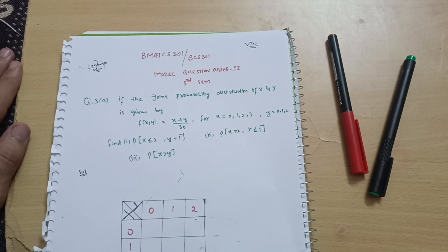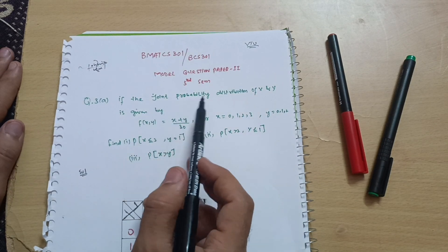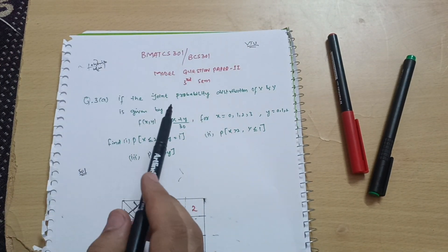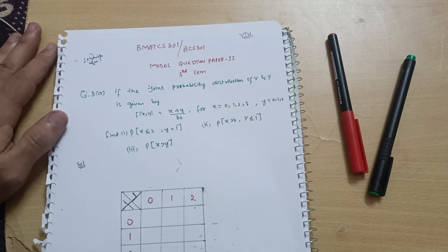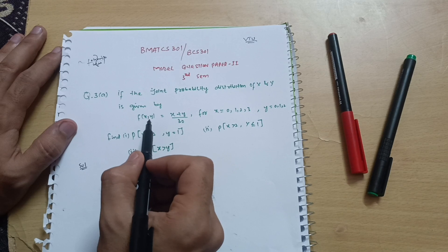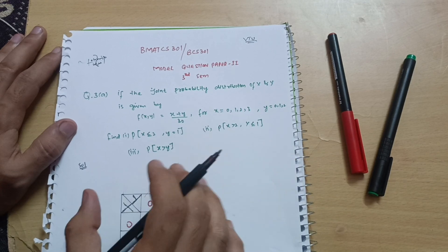Hello dear friends, welcome back to my channel. We are discussing the model question papers for mathematics subject BMAT CS301 or BCS301. In previous videos I have discussed a variety of questions from the model question paper — the link is in the description box. On this particular topic, joint probability distribution, I have solved one question before, but that question is totally different. In this question we have to form a probability table where f(x,y) = (x+y)/30.